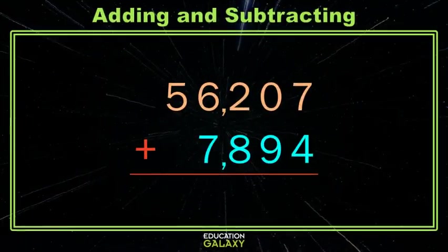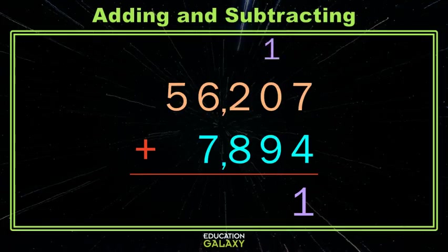7 plus 4 is 11. 11 doesn't fit — the 1 goes here, but the 10 goes next door. Now we have 1 and 9, which is 10. We leave the 0, carry the 1. 2 and 8 is 10, plus the 1 we carried is 11. 1 stays here, 1 goes to the neighbors.